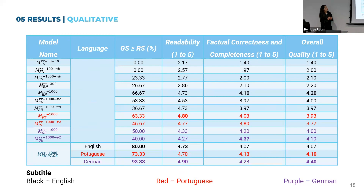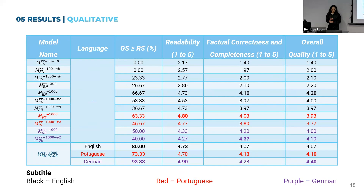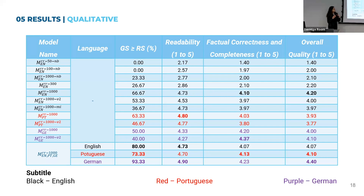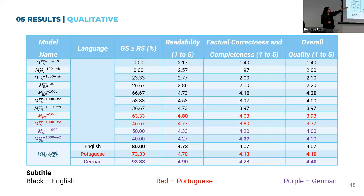Here we have the qualitative results. As expected, the models trained with the unbalanced dataset have really bad qualitative results — they were completely overfitted. We can also see that the higher the maximum token parameter, the better the generated summaries are. Summaries with fewer tokens are insufficient to convey the critical information of the reports. The models with the best results are those trained with the balanced dataset and a 1000 maximum token parameter, and that are not the V2 or meta-information versions. For example, in English, 66.67% of the generated summaries were equal to or better than the reference summaries, whereas this value for the V2 version was only 53.33%.